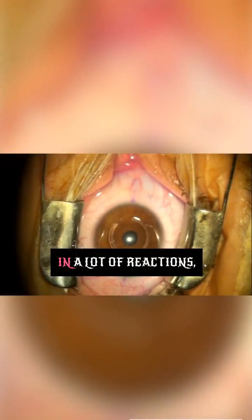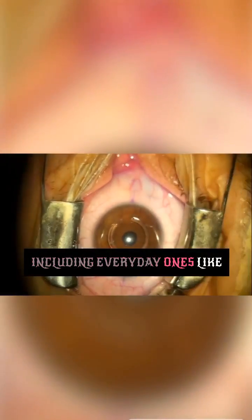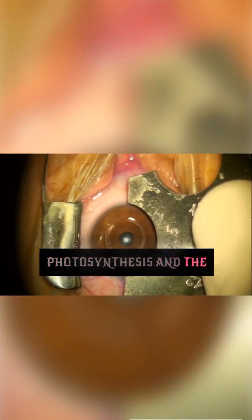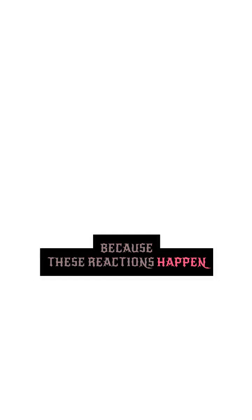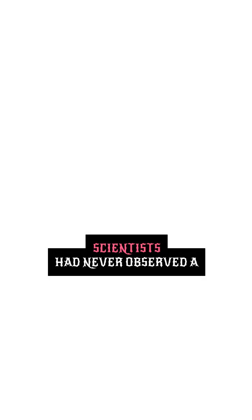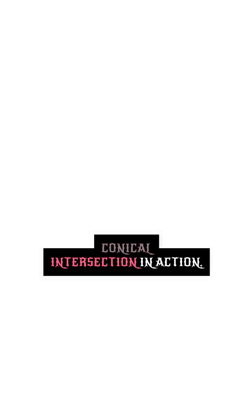Conical intersections occur in a lot of reactions, including everyday ones like photosynthesis and the light-detecting reactions that take place in the retina. Because these reactions happen so quickly, though, scientists had never observed a conical intersection in action.